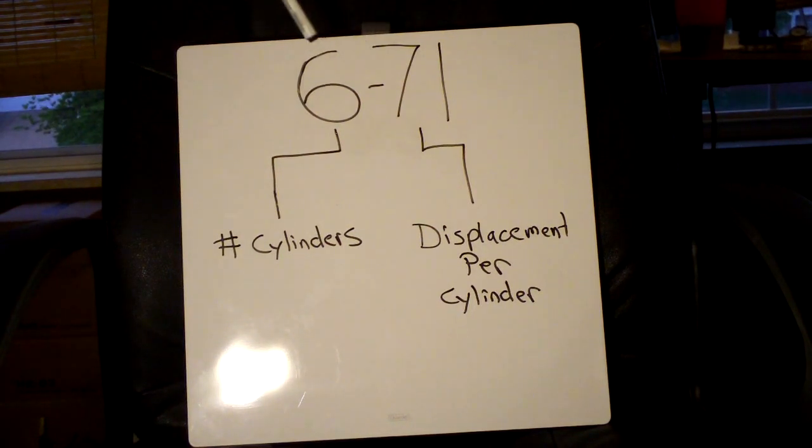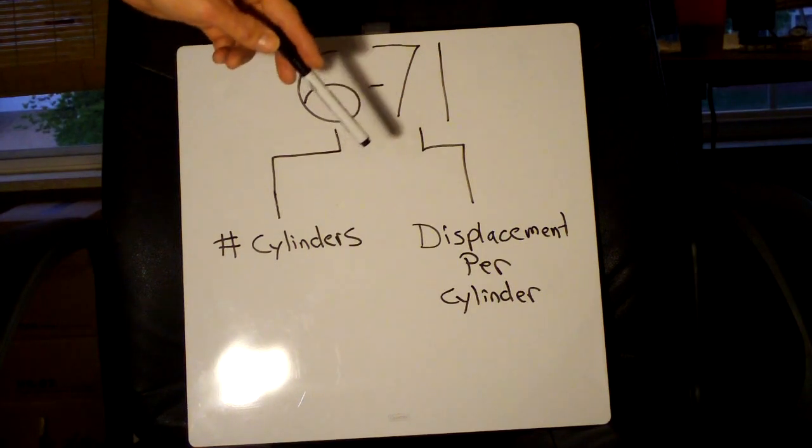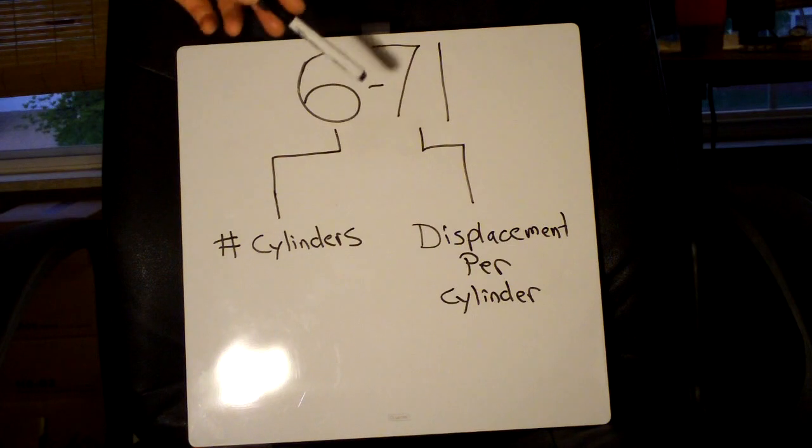Now this can be different as you can have a 6V53, a 6V71, or a 6V92. And those last two numbers are going to dictate the displacement per cylinder.